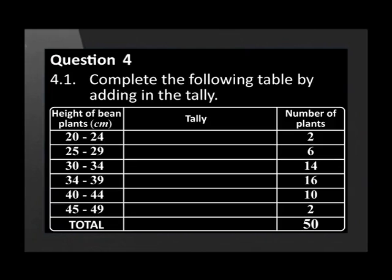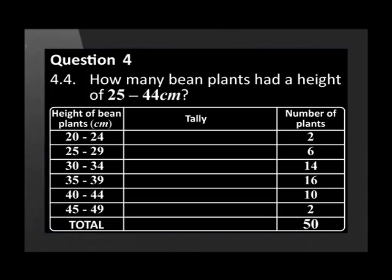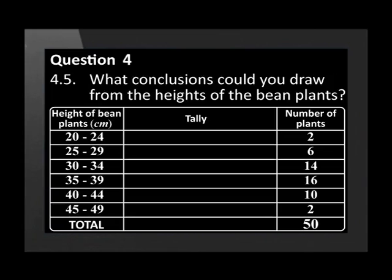We will be organizing data using groups and tables. The grade 11 life sciences students at your school conduct a study on 50 bean plants. After growing for 90 days, the plants' heights were measured and rounded off to the nearest centimeter. The data was recorded in groups on a frequency table. Complete the following table by adding in the tally. How many bean plants had a height of less than 35 centimeters? How many bean plants had a height of 19 centimeters or less? How many bean plants had a height of between 25 and 44 centimeters? What conclusions could you draw from the heights of the bean plants?